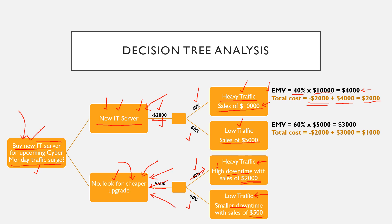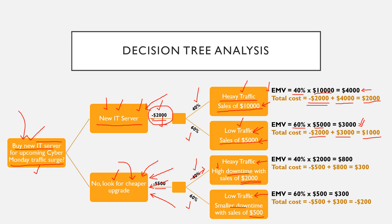For the new IT server with low traffic scenario: there is a 60% chance of making $5,000, which equals $3,000. Total cost is minus $2,000 (the server cost) plus $3,000 (expected sales), giving an EMV of $1,000 for the low traffic scenario.